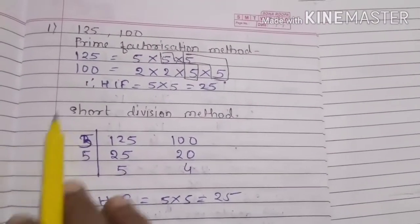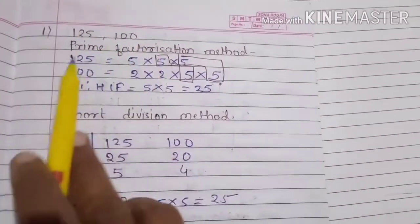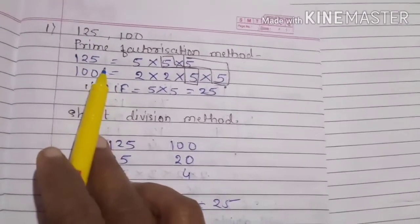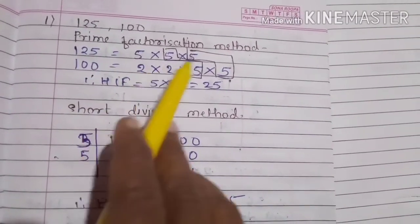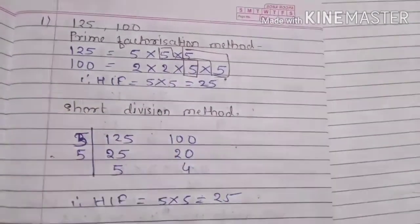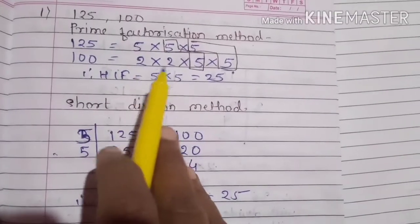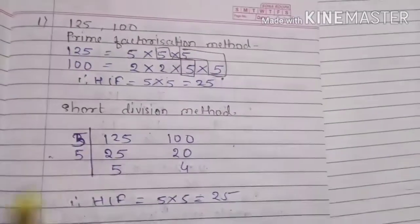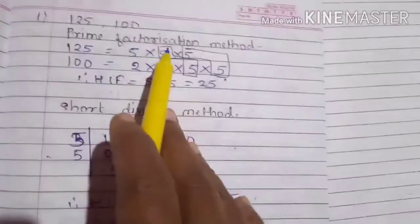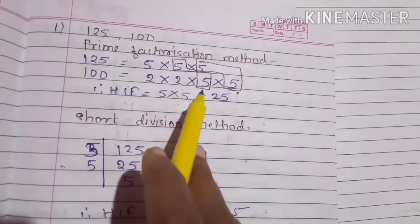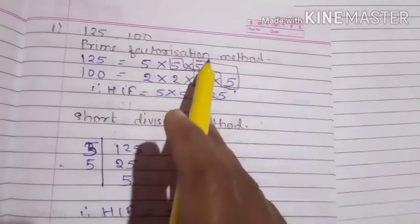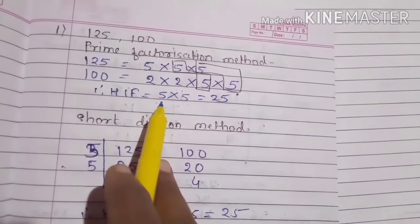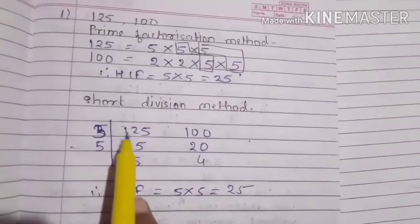The last example is 125 and 100. Using the prime factorization method, factorize 125 to get 5 × 5 × 5, because five fives are 25 and 25 fives are 125. Factorize 100 to get 2 × 2 × 5 × 5, because five fours are 20 and five twenties are 100. The common factors are five and five — both are common in each factorization — so 5 × 5 = 25. The HCF is 25.